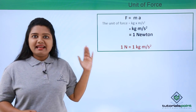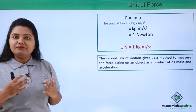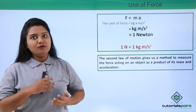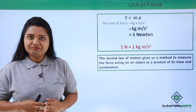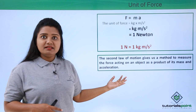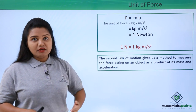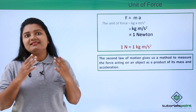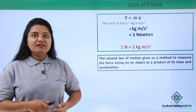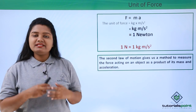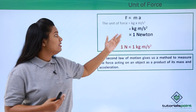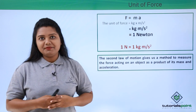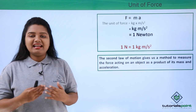This second law of motion gives us a method to measure the force acting on an object by simply knowing its mass and the acceleration with which it is traveling. In this video we looked at the mathematical formulation of Newton's second law and found that the unit of force is 1 newton = 1 kg·m/s². I hope this video was fully understandable. Thanks for watching.